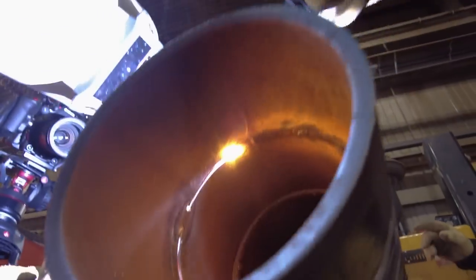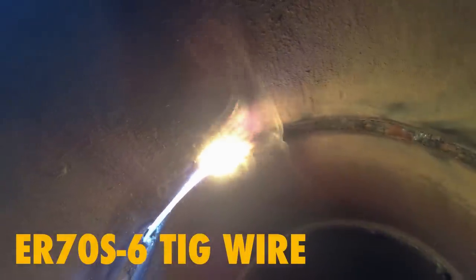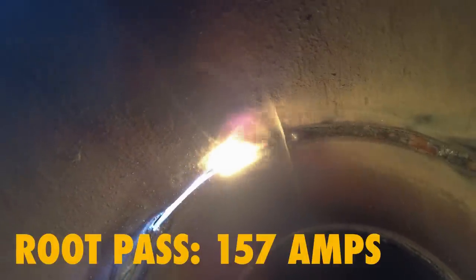Really good uniformity. From there he'll be doing a TIG hot pass, a TIG fill, and a TIG cap. We're using 70S-6 TIG wire and he's welding at 157 amps.